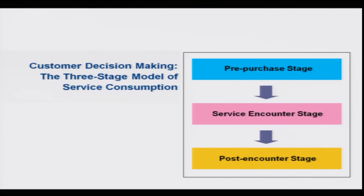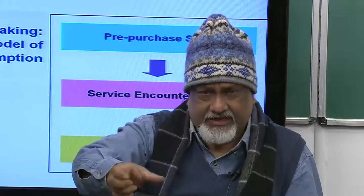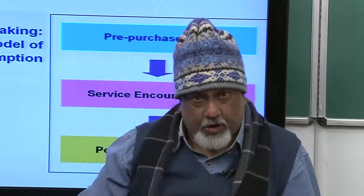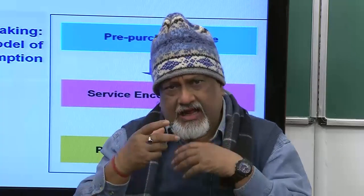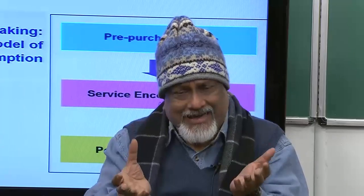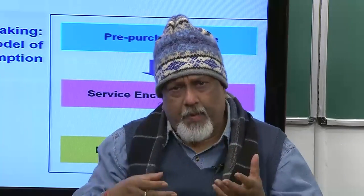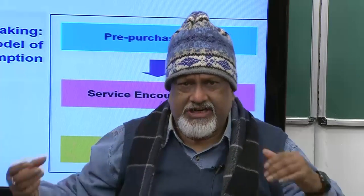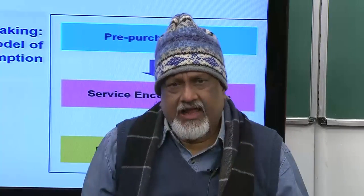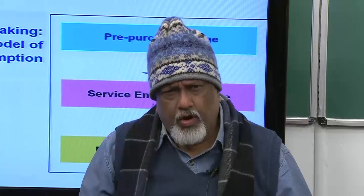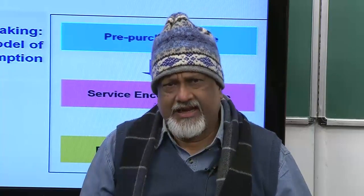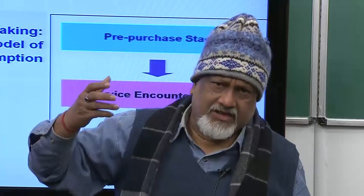Here we divide the whole encounter between the marketer and consumer into three stages: the pre-purchase stage, the service encounter stage, and the post-encounter stage. The service encounter stage could be a combination of product and service — like a movie outing, where the movie itself is intangible entertainment, but the ambiance, the popcorn, the snacks, the seat, the comfort, and the air conditioning are all tangible parts of that experience. Most products and services come to us in this mixed fashion — somewhere product elements are higher, somewhere service elements are higher.